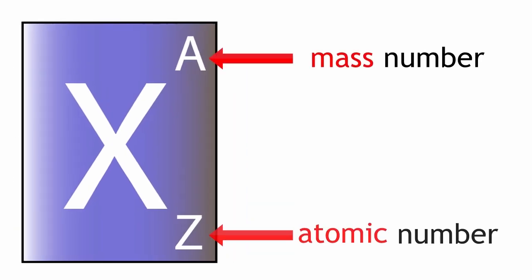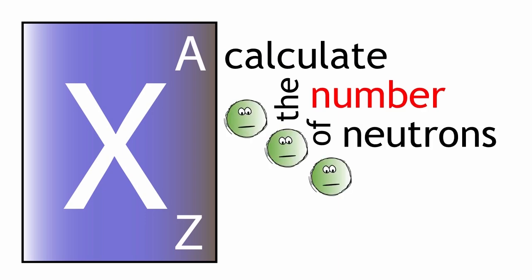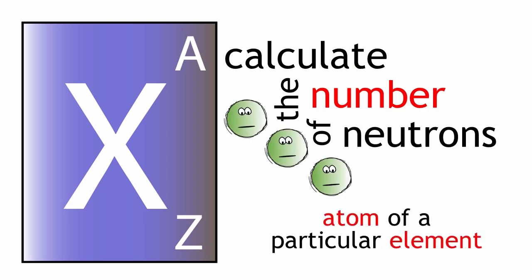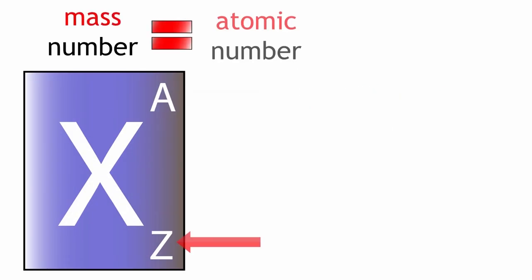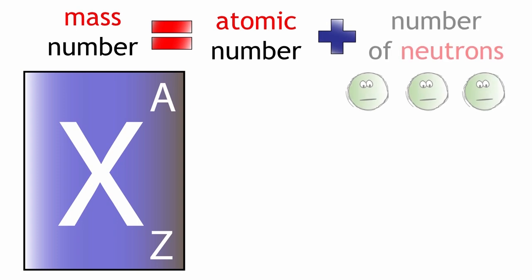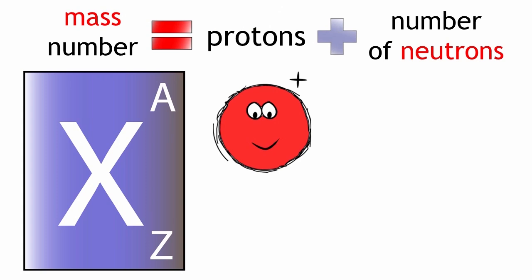So if we know the mass number of an element and we know the atomic number, we can calculate the number of neutrons in an atom of a particular element. The mass number equals the atomic number plus the number of neutrons. The atomic number is just the number of protons in an atom. Therefore, mass number equals protons plus neutrons.